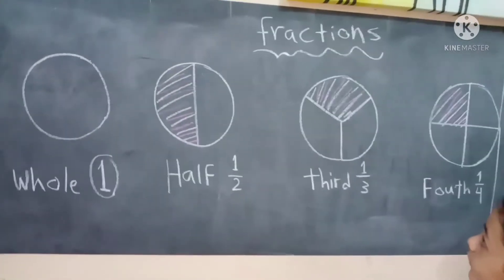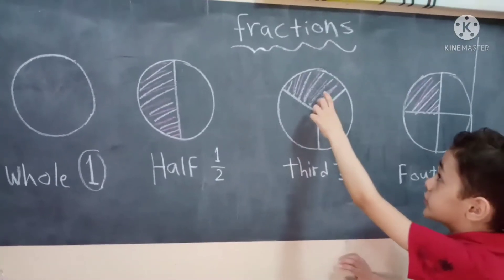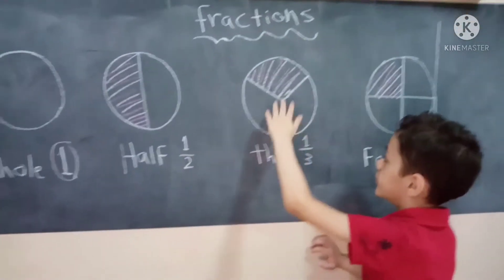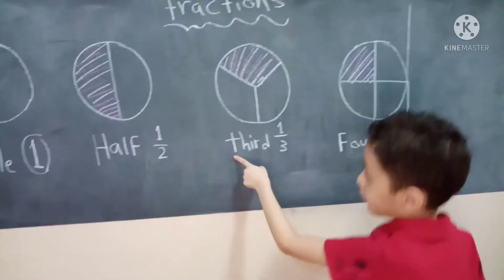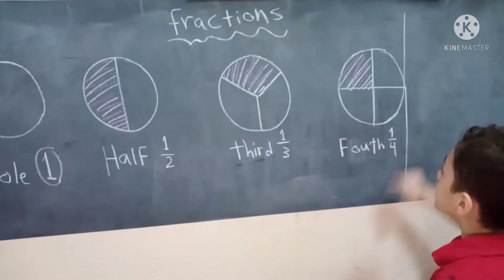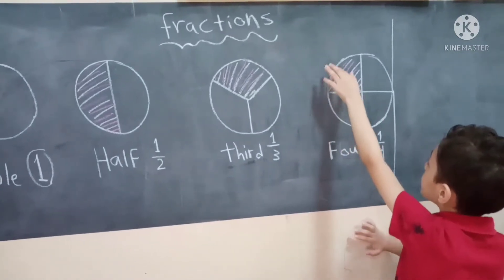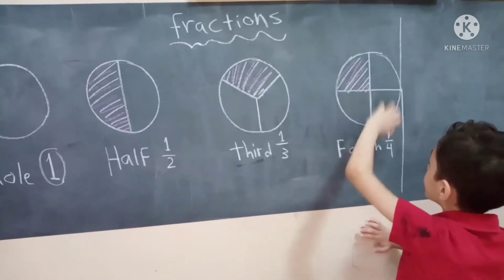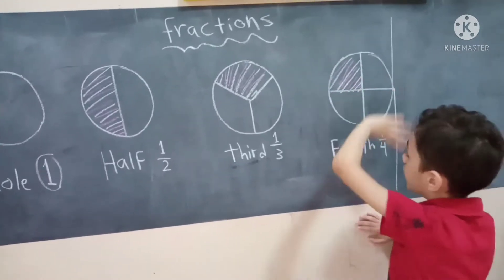And the third one, one third. Because this is one colored and all is third. Three. So it's called third. And this is one fourth. One colored and four. And four is all.